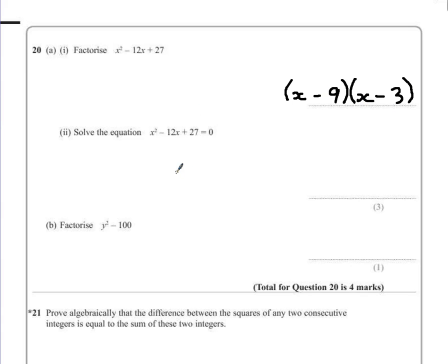Part 2 asks us to solve the equation x squared minus 12x plus 27 equals 0. Now because we've factorized this, put it into two brackets, to make this equal to 0, each of these brackets has to become 0 as well.